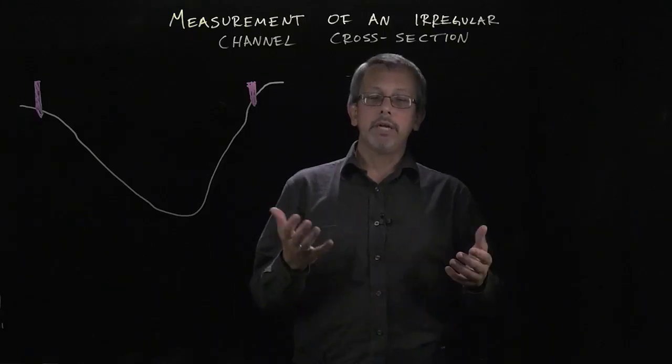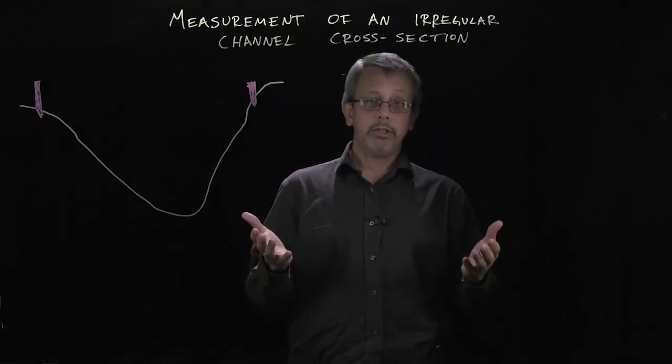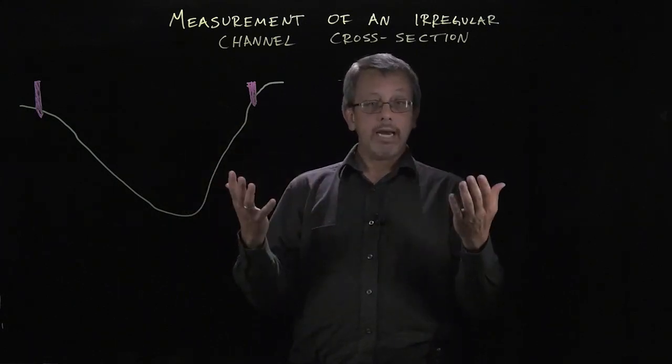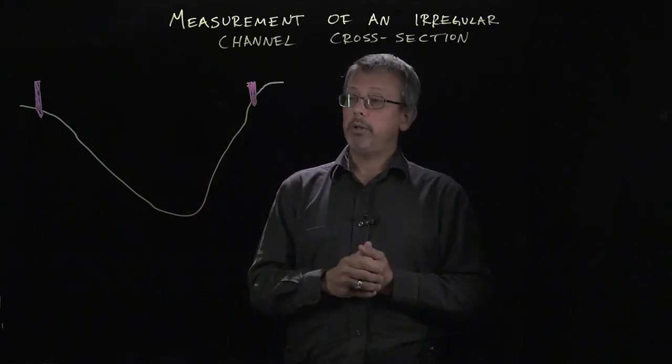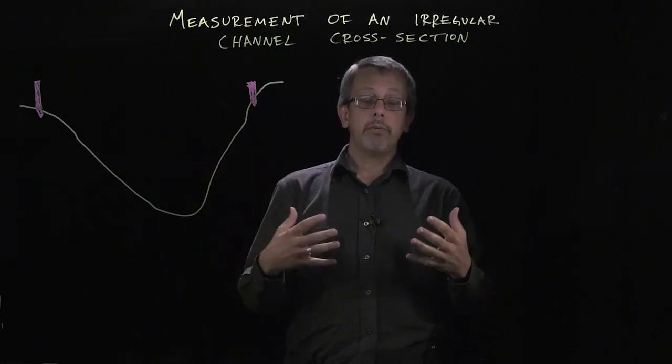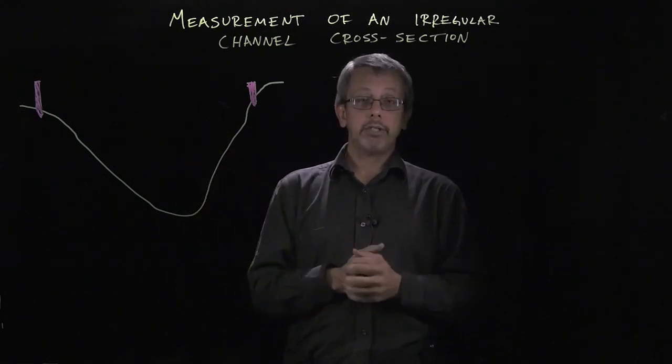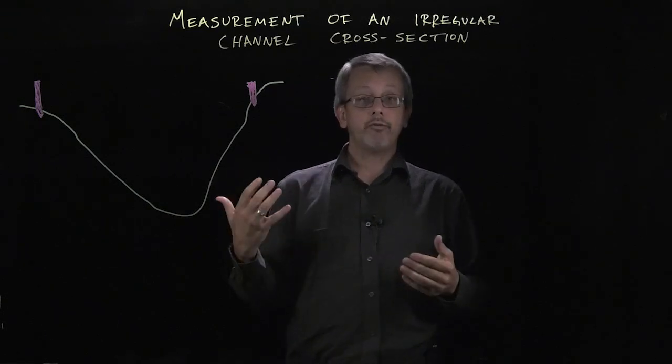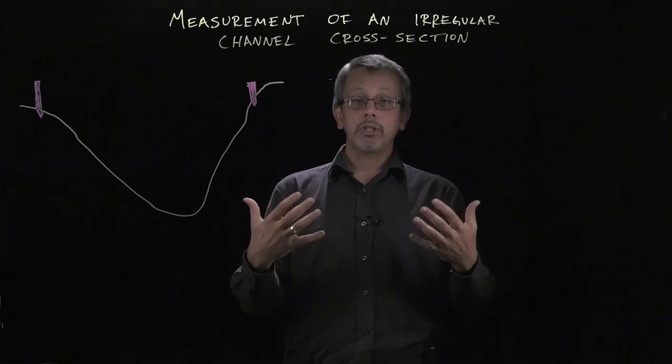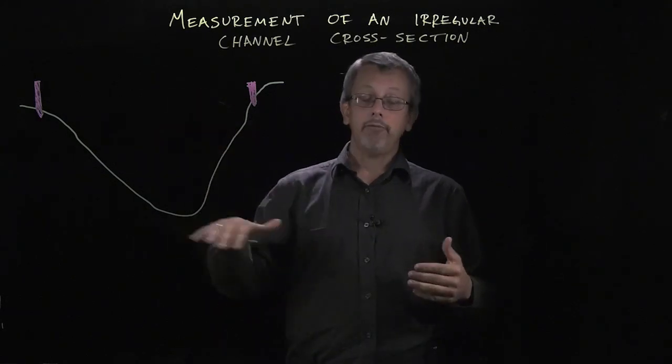Let's talk about the measurement of an irregular channel cross-section. For example, here I have a picture of a dry channel. We're going to talk about how we might be able to determine some of the important geometric characteristics of the cross-section as the water is flowing through it, knowing that those characteristics will change with the depth of the water.